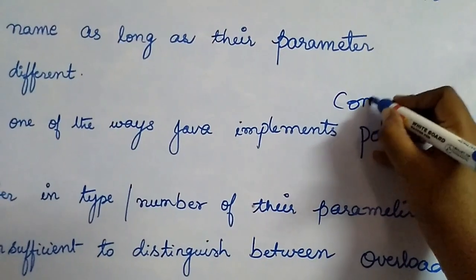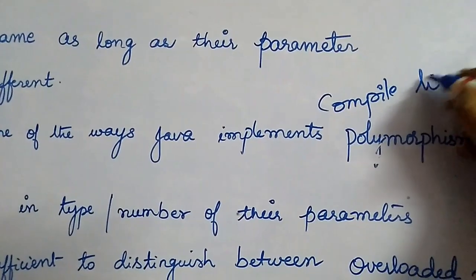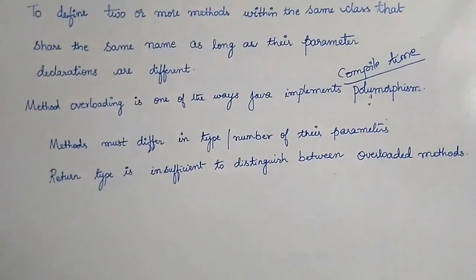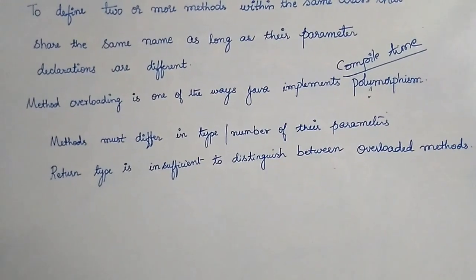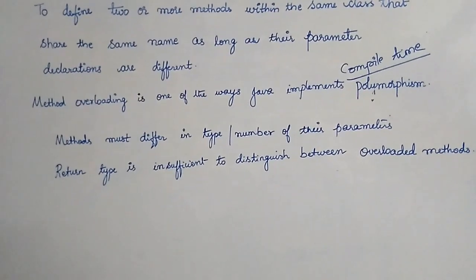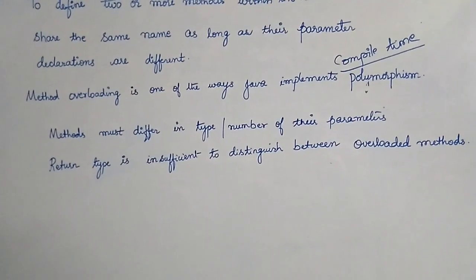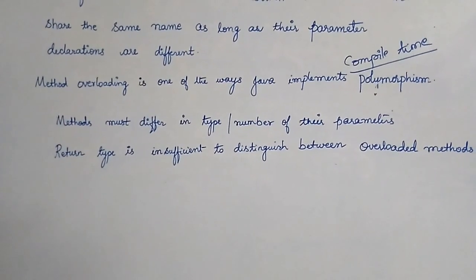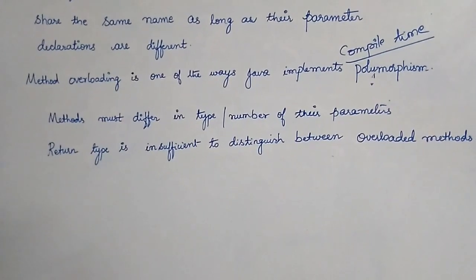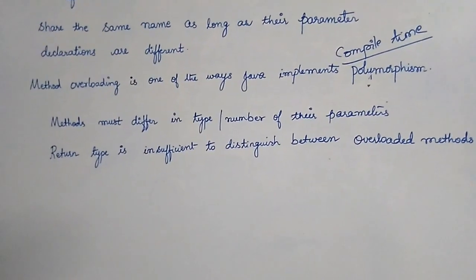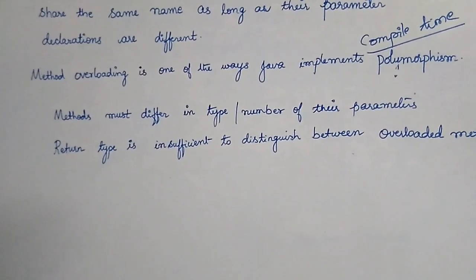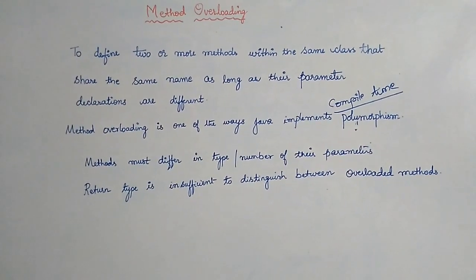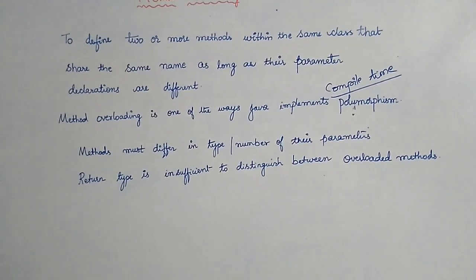Method overloading is also called compile-time polymorphism, because the compiler will decide which version of the method to call. Methods must differ in the type and number of their arguments — this is the rule. The return type of the methods is insignificant; the compiler cannot distinguish between method versions using return type alone. Both instance methods and static methods can be overloaded.